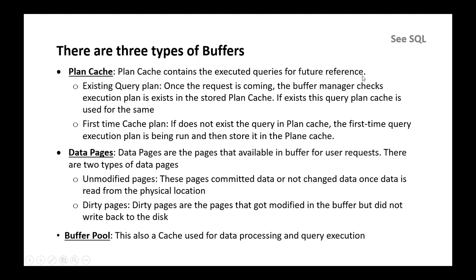Plan cache contains executed queries for future reference, and it has two types: existing query plans and first-time plans. For existing query plans, when a request comes in, the buffer manager checks if the execution plan already exists in the plan cache. If it exists, that cached plan is reused. For first-time plans, if the execution plan does not exist in the plan cache, the query is compiled, executed, and then stored in the plan cache for future use.